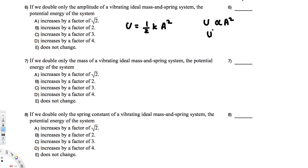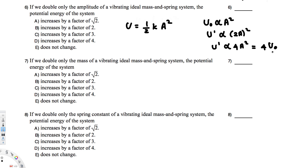If we start with initial energy U₀ proportional to A², and then double the amplitude, the new energy is proportional to (2A)² = 4A². Writing this in terms of the initial value, U' = 4U₀. So the potential energy increases by a factor of 4. That's the answer for the first question.